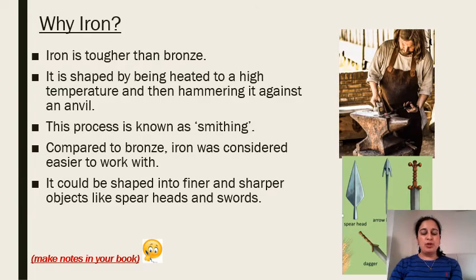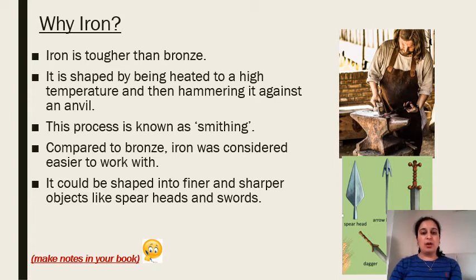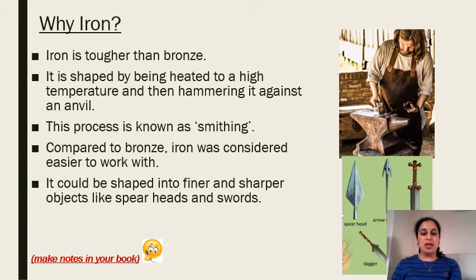Why do you think people used iron so widely after they had discovered bronze, which they actually thought was pretty strong? They realised that iron is tougher than bronze. It is shaped by being heated to high temperature and then hammered against an anvil, so it's quite a good material to shape in different ways. The process of this heating and hammering is called smithing. Compared to bronze, iron was considered easier to work with because with bronze you had to combine two other metals — tin and copper — whereas with iron it was naturally extracted from rock. It can be shaped into finer and sharper objects like spearheads and swords, and we still use iron today to make tools. Please pause here and make sure you include the word smithing in your notes and describe what it means.